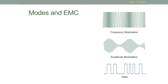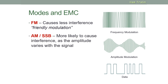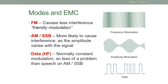A look now at modes and EMC. From the earlier module, you'll hopefully recognize frequency modulation, amplitude modulation, and the symbol for data. In general, FM frequency modulation causes less interference. A handy way of remembering this – FM as friendly modulation. AM, or upper or lower sideband SSB, tends to cause more interference as the amplitude of the signal varies. Data is normally constant modulation, so is less of a problem than speech on AM or upper or lower sideband. Remember, friendly modulation is one of the better ones, and AM or SSB is more likely to cause interference.